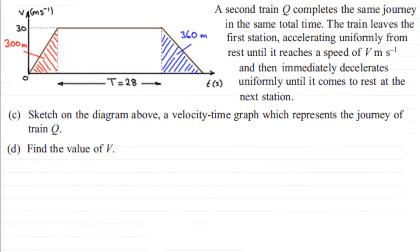Hi. Now, in this next part of the question, we're told that a second train Q completes the same journey in the same total time. The train leaves the first station accelerating uniformly from rest until it reaches a speed of V meters per second, and then immediately decelerates uniformly until it comes to rest at the next station. What we've got to do is sketch on the diagram above a velocity-time graph which represents the journey of train Q, and then find the value of V.